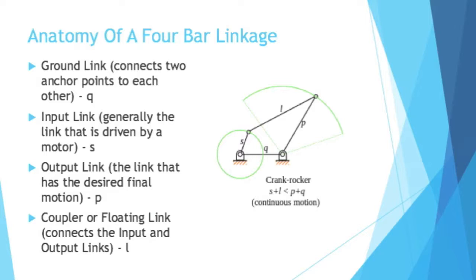Four-bar linkages have their own anatomy. All the links, all the bars, they have names. You have the ground link, which connects two anchor points to each other. That's represented by the Q line in that image. And you need anchor points for your four-bar linkage. It's a moving object that has to be held down to something, or you're not going to get a lot of control.